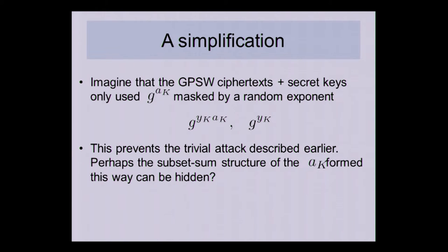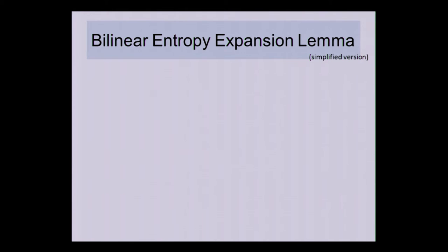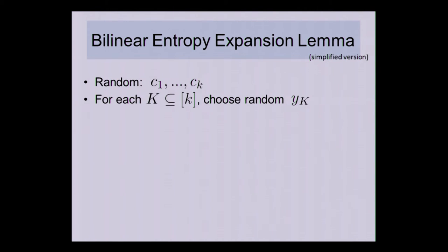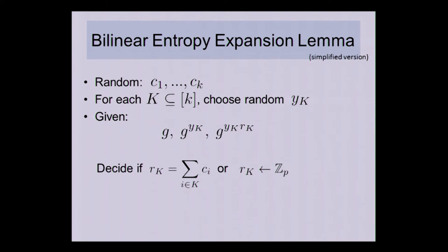This is the main technical lemma of our paper — the simplified version applying to the simplified scheme. We choose a small number of random exponents c_1 through c_k. For each non-empty subset k, we choose a random exponent y_k, and give out g^(y_k) and g^(y_k · r_k). You need to tell whether r_k equals the subset sum for all k, or is independently randomly chosen for each k. If we have this, we publish g^(c_1) through g^(c_k) as public parameters, use subset sums in constructing ciphertexts and secret keys, and use this lemma to transition to a version using independent random elements — just like GPSW — and then proceed with the rest of the GPSW security proof.